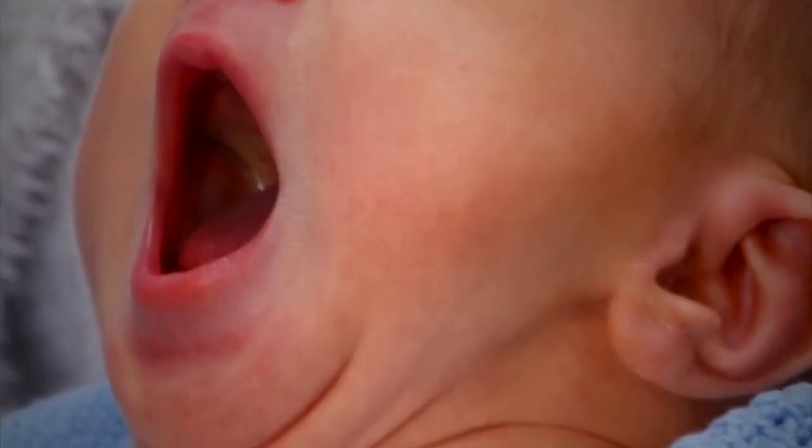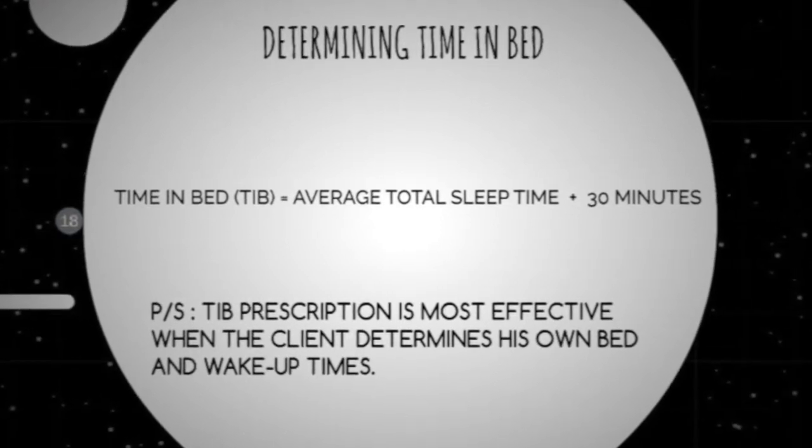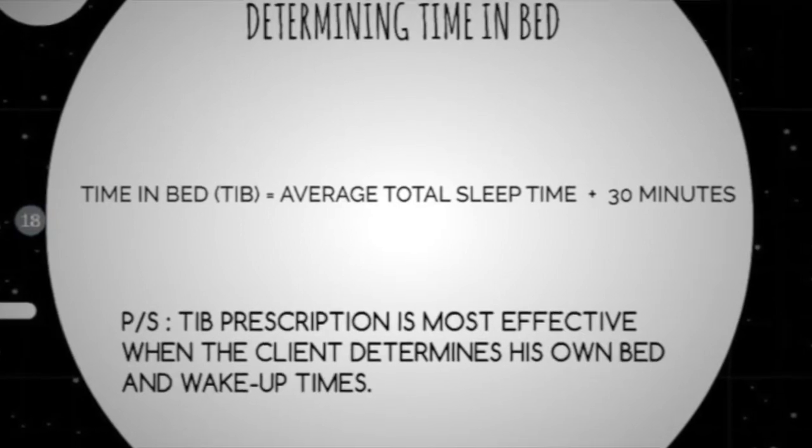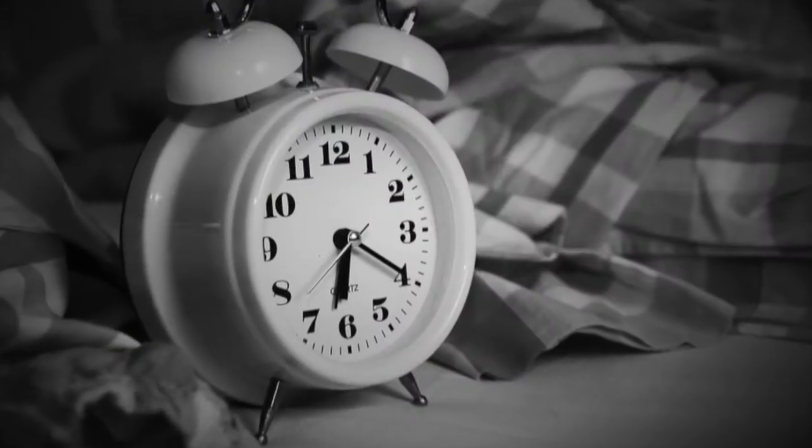Number six: go to bed when you're sleepy but not before the suggested time. Just as getting up at the same time is important, setting a sleep schedule by trying to go to sleep at a certain time matters too. This can be done using the TIB (Time in Bed) prescription. To determine your bedtime, first establish what time you need to be up — for example, 6 a.m. — then use the two-week sleep diary from pre-assessment. Count the average total sleep time plus 30 minutes to set your TIB prescription.